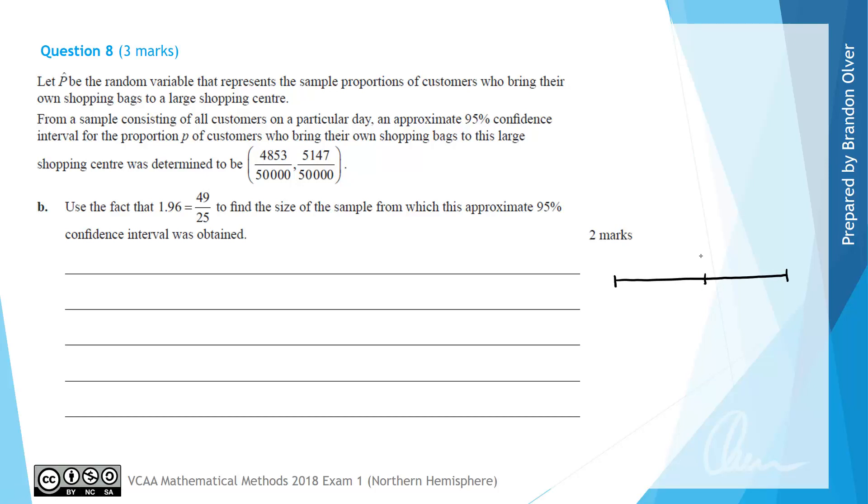If we represent our confidence interval as a line, we previously found that the P hat value was 5000/50000, the upper bound was 5147/50000, and the lower bound was 4853/50000. We know that the distance between our P hat value and either bound equals the Z score times the square root of P hat times (1 minus P hat) over N.